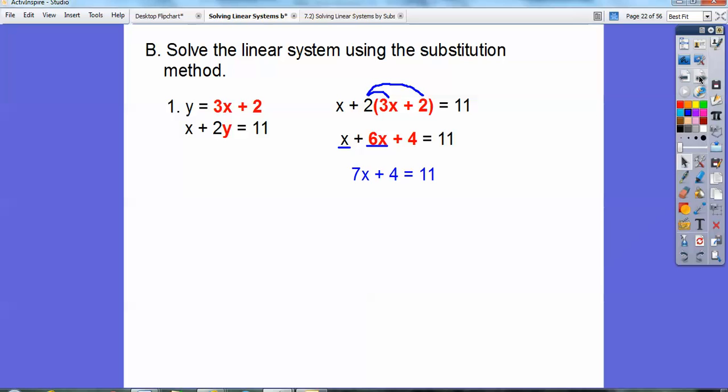All right, then we're going to subtract 4 from both sides, and we're going to get 7x equals 7. And so x equals 1. Okay, and then we're going to substitute x right back up there where the x is in the first equation right there. So put in 1 right there. 3 times 1 plus 2 is going to get us 5, so the answer is 1, 5.